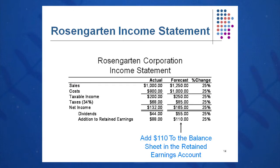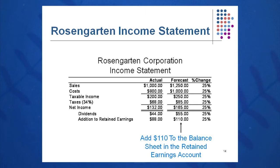If you're totally lost with this concept, you can simply take column one of actuals and multiply every number by 1.25, and you'll get the forecast value. This is a very simple method of growing your income statement from one year to the next.